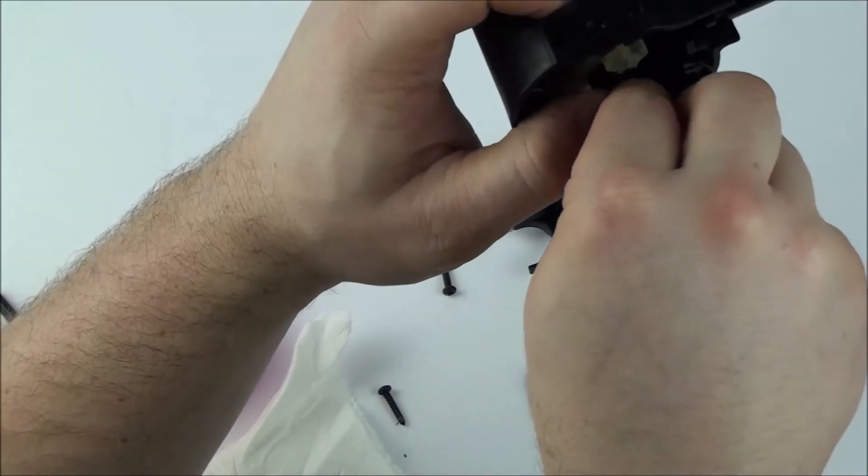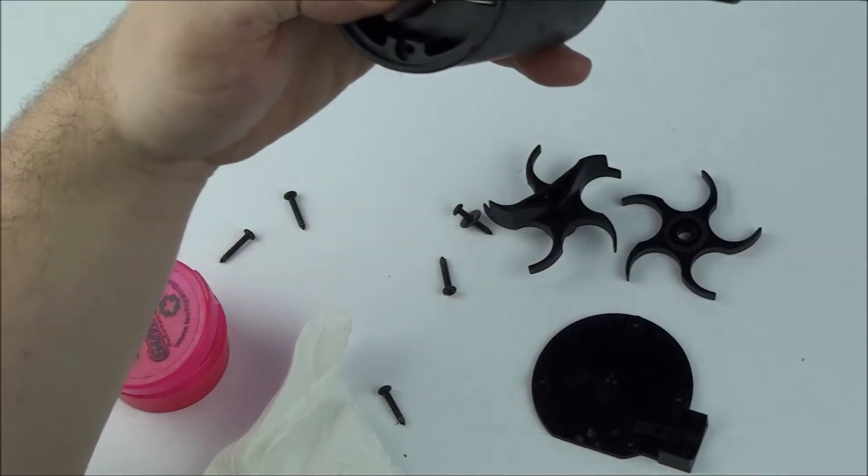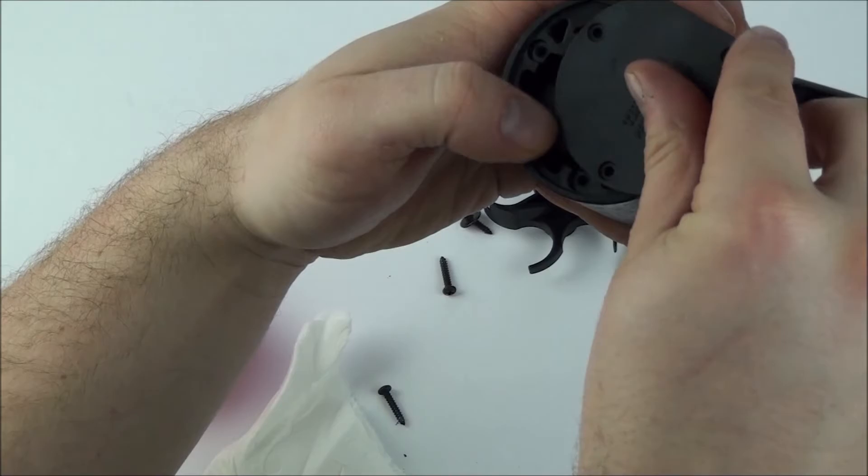Replace the number 11 ratchet spring if you removed it before, and then replace the bottom plate back onto the Cyclone and replace all four of the number 8 screws.